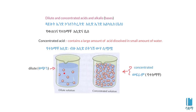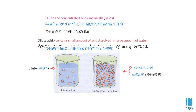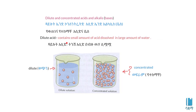Dilute acid is the opposite — it contains a small amount of acid dissolved in a large amount of water.